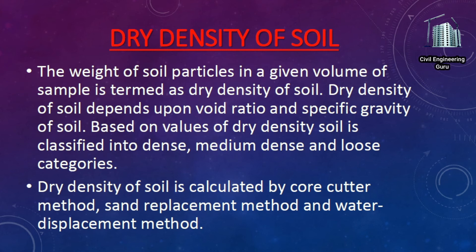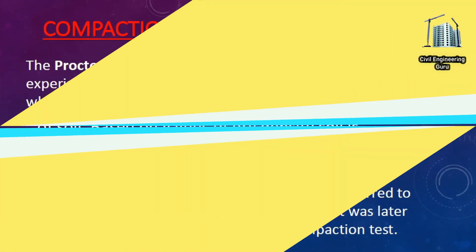The next type is dry density of soil. The weight of soil particles in a given volume of sample is termed as dry density of soil. It depends upon void ratio and specific gravity of soil. Based on values of dry density, soil is classified into dense, medium dense, and loose categories. Dry density of soil is calculated by the core cutter method, sand replacement method, and water displacement method.